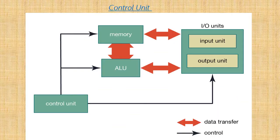Control Unit is called the central controller of the computer system. It manages the various components of the computer — it reads and interprets the computer program given by the input device and transforms them into a series of control signals which activate other parts of the computer.